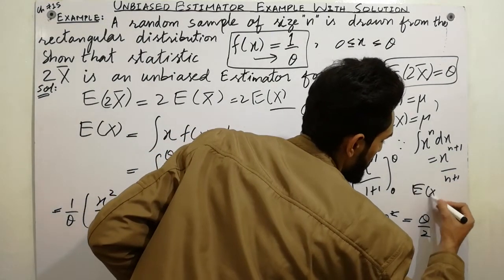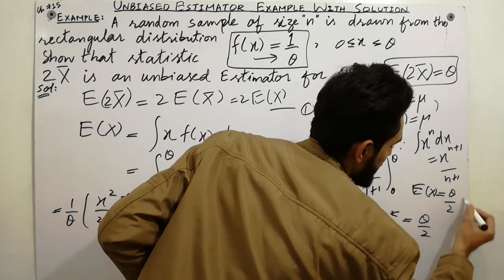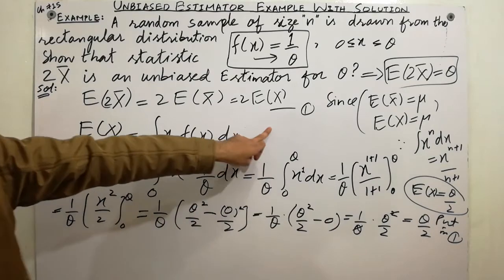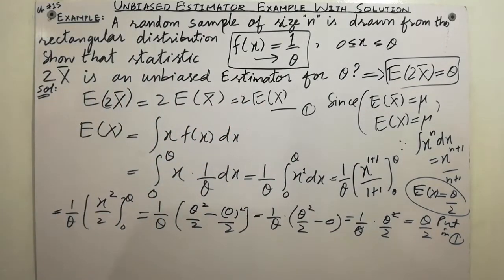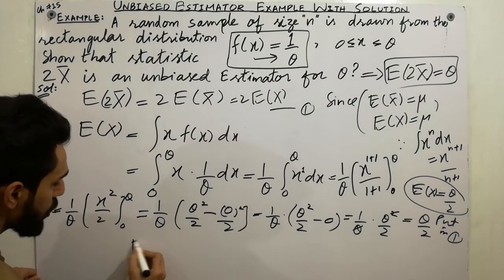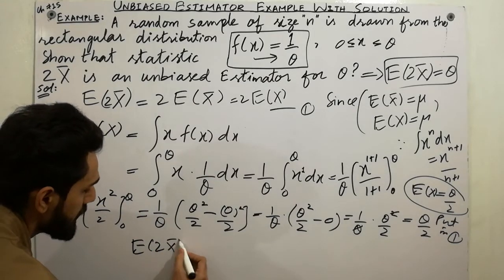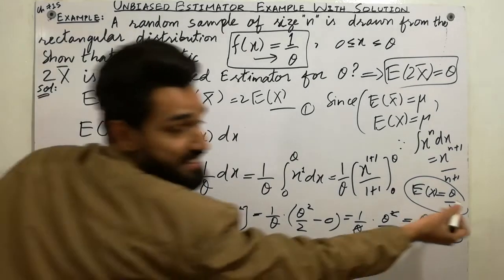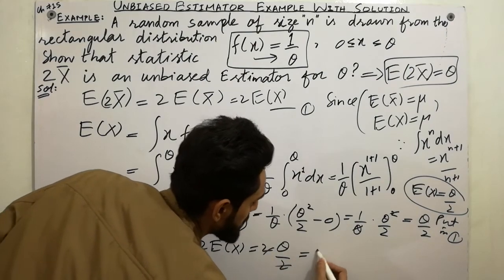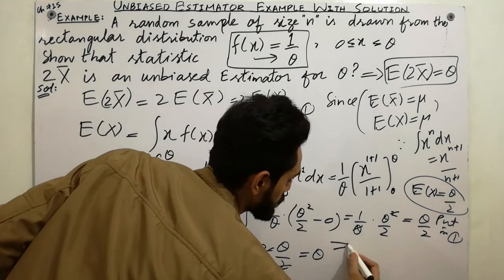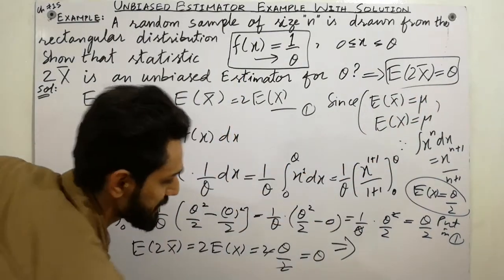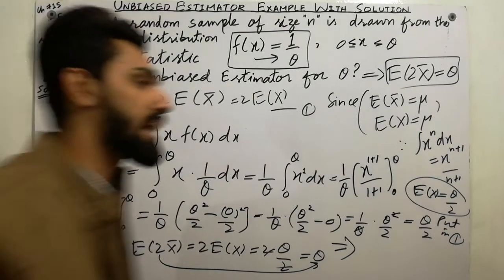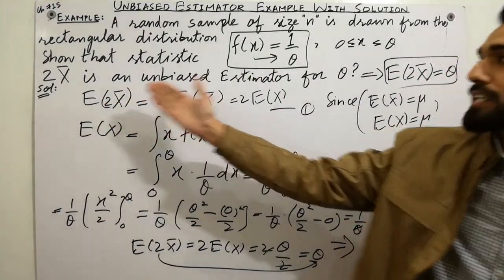So expectation of x = theta/2. Now substituting this value back into equation number 1: expectation of 2x̄ = 2 × expectation of x = 2 × (theta/2) = theta. So I have simply proved that expectation of 2x̄ = theta, which means 2x̄ is an unbiased estimator for theta.